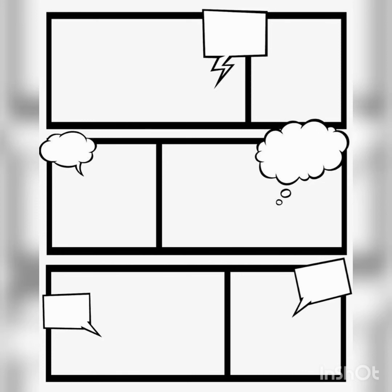Step three: plan the layout. It's almost time to start drawing. When working on the layout, your goal is to keep the reader interested. One way to do this is to end each page — not all, but some — with a cliffhanger. Draw the reader in, let them know something interesting is about to happen, but don't reveal what that is until they turn the page. Don't forget to leave room for the dialogue.